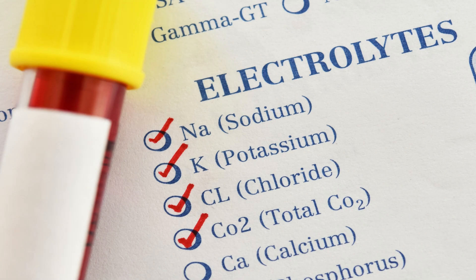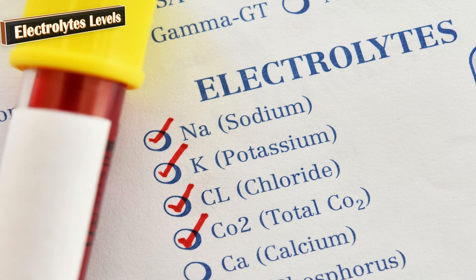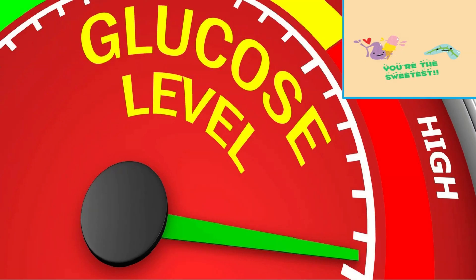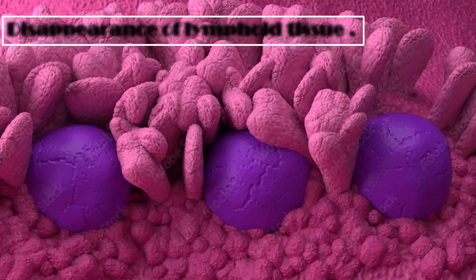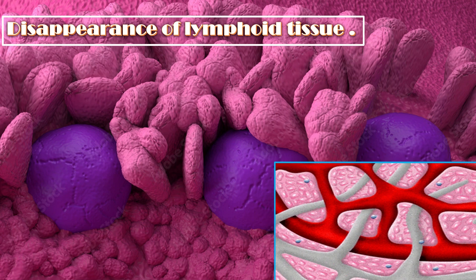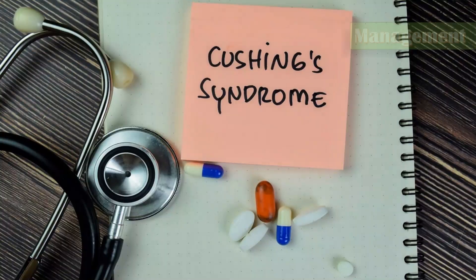Checking electrolyte levels: a patient with Cushing syndrome presents with an increase in serum sodium and a decrease in potassium level. There is also an increase in blood glucose level and disappearance of lymphoid tissue.